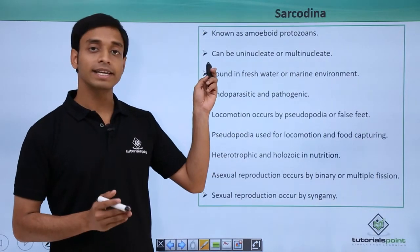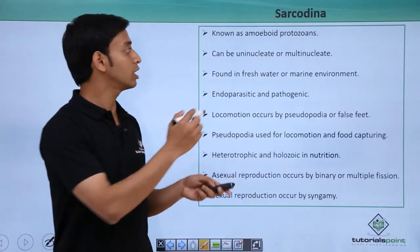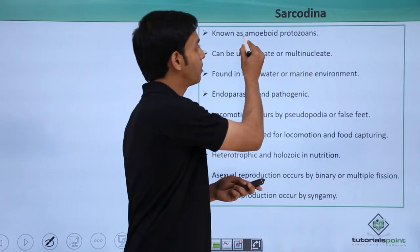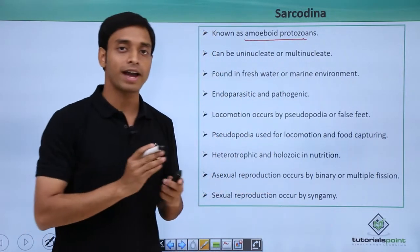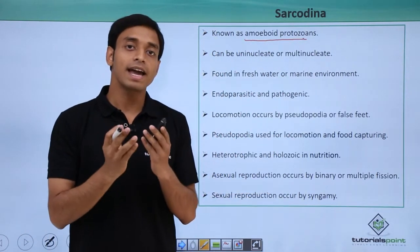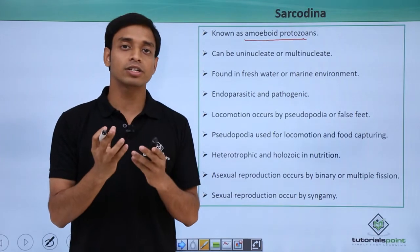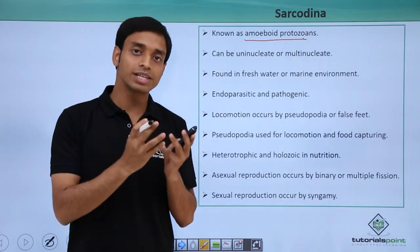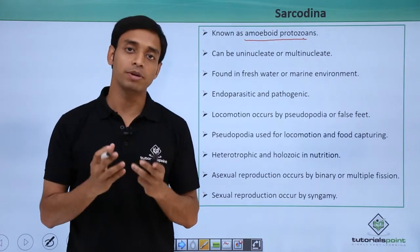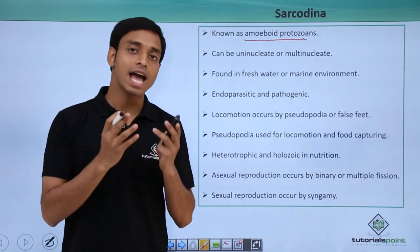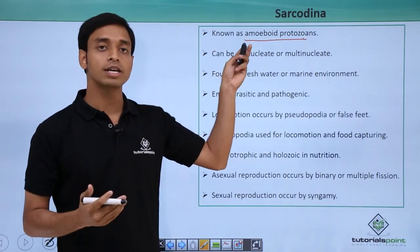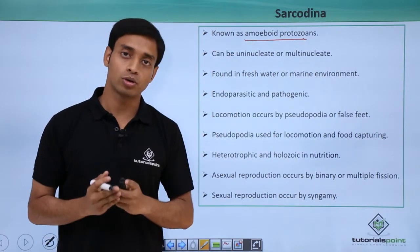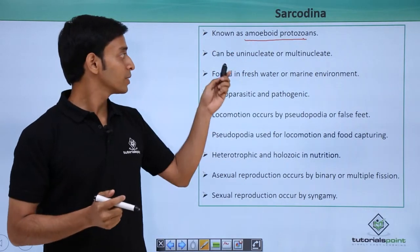Sarcodina are also termed as the amoeboid protozoans because they have characteristics mostly like amoeba. So they are amoeba-like cells, hence they are also called amoeboid protozoans.